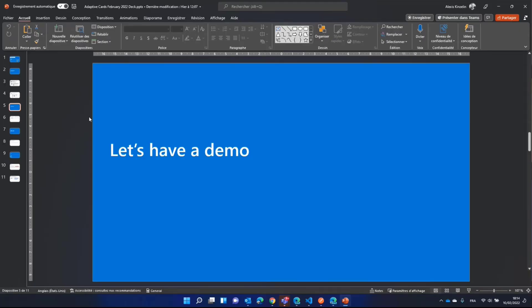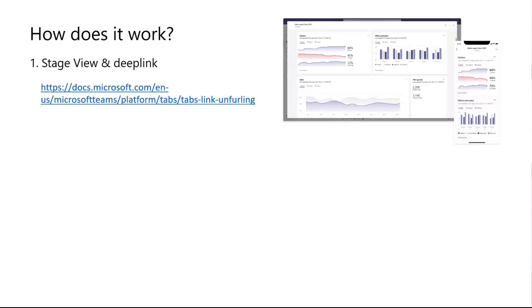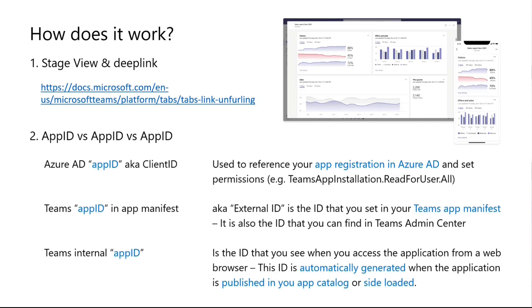So this was the demo. Now the question is: how do we make that happen? We need two main things. First, we're not directly using a feature of Adaptive Cards — we're expanding it with a stage view to play the video. The first thing to understand is: what is stage view and how to generate a deep link. A deep link in Teams points to a specific application or starts an application. We use the same principle, but this time to open a video in stage view mode from the Adaptive Card.